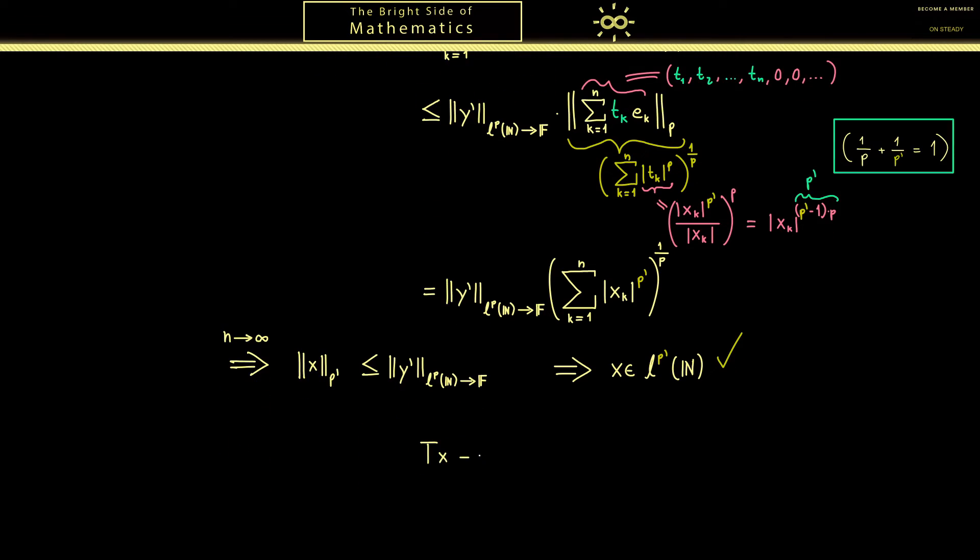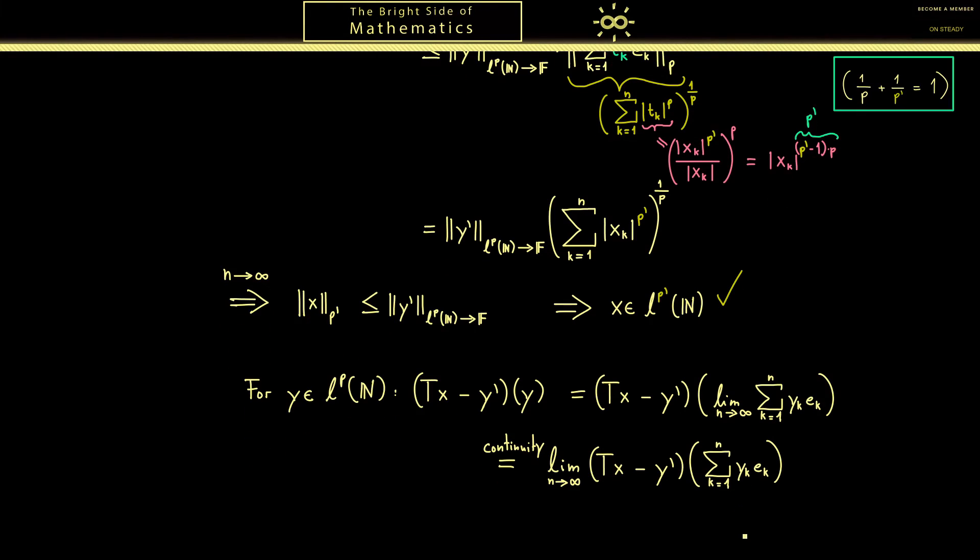And the second question was is Tx the same as y'. Now please recall both objects are linear functionals defined on Lp. Hence we can just look at the difference and put in any vector y from Lp. If the outcome is always 0 no matter which y we put in then we know the functionals are the same. Now we use the fact that each y can be approximated by a linear combination from the ek's from before. It's not hard to check that this always holds so the limit is just y. Now let's use the continuity of both maps to bring the limit in front. And then the next step of course would be to use the linearity to bring the sum in front. Now you finally see where the definition of x actually came from. It was chosen in such a way that we get 0 out here. So please check by the definition of Tx if you apply Tx to ek then only the number xk remains for the outcome.